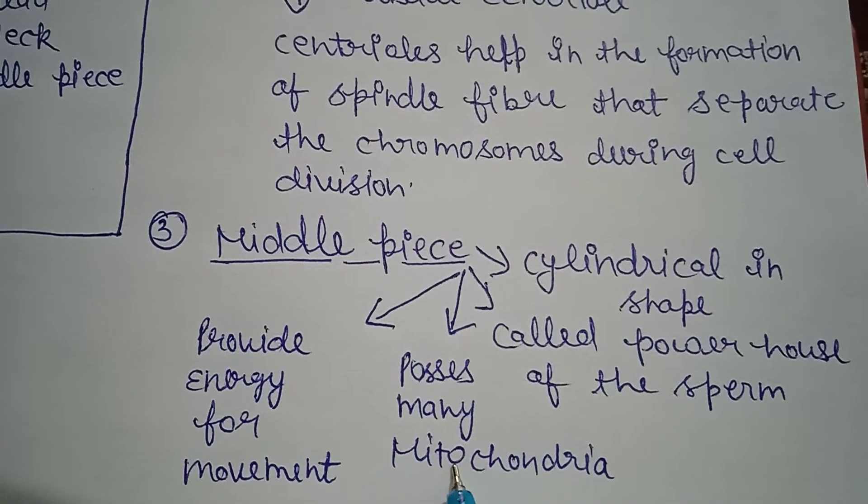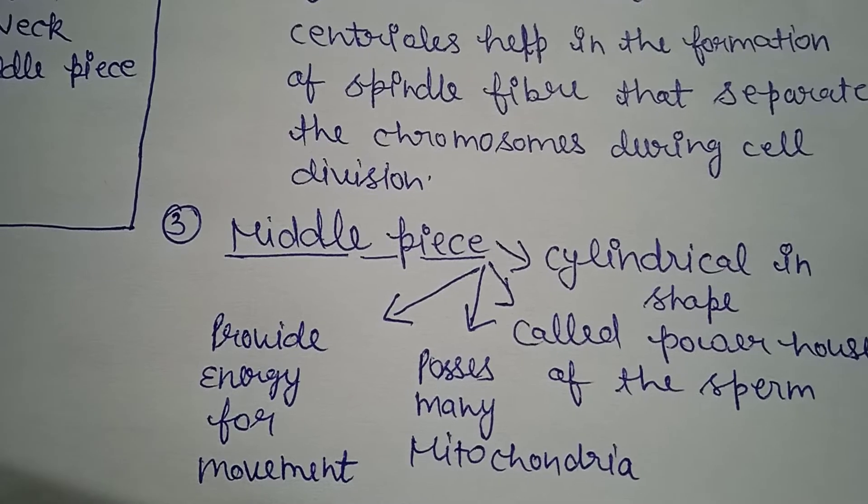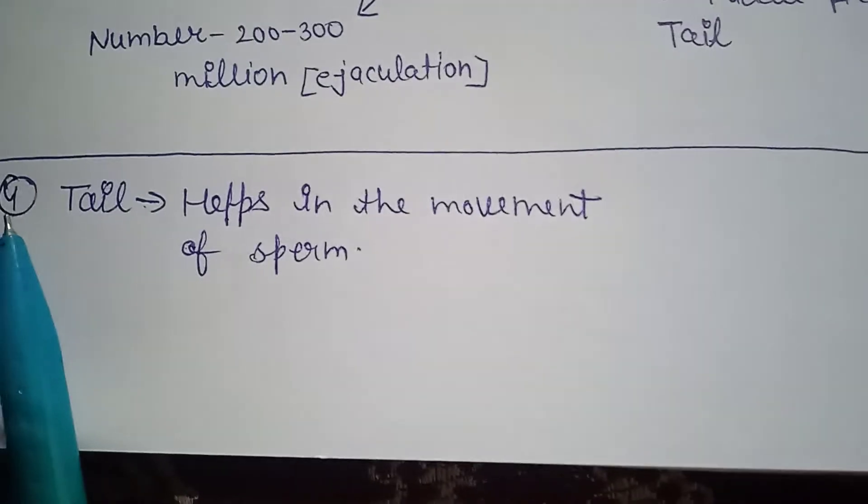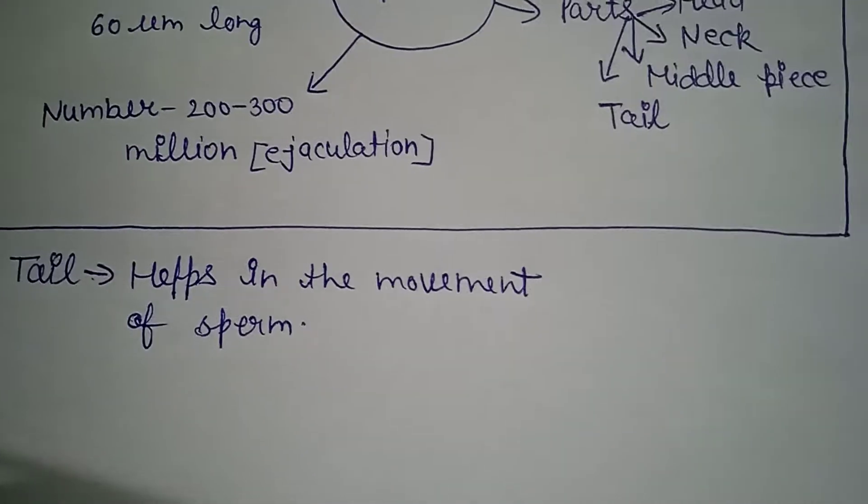Last part is tail. What is the function of tail? It helps in the movement of the sperm. Tail basically helps in movement.